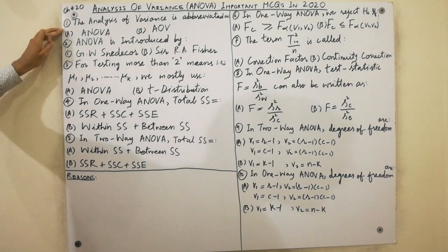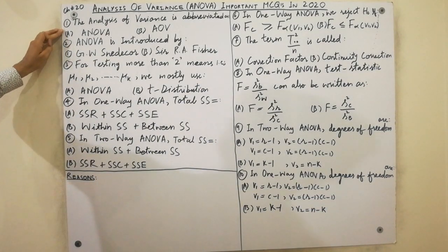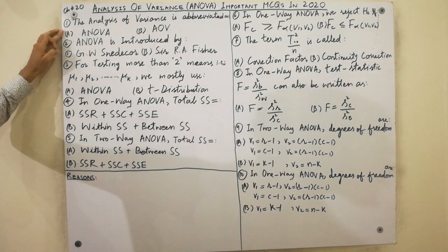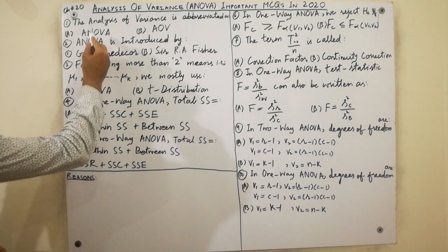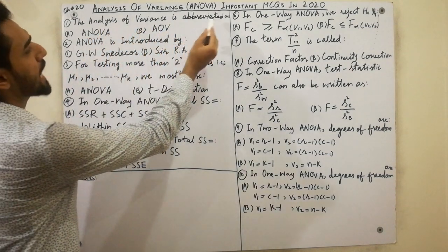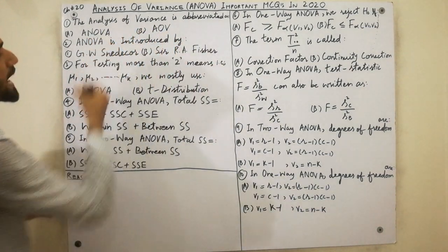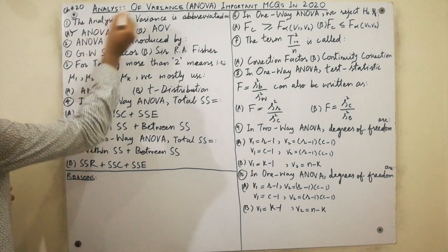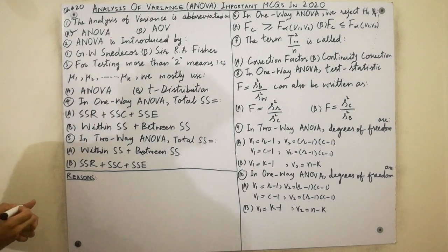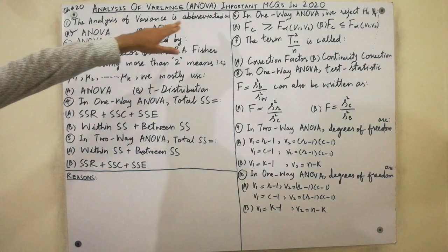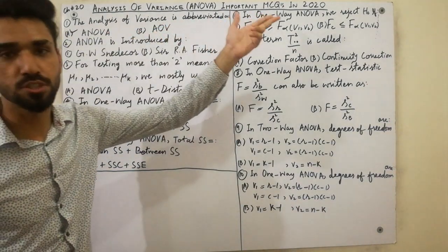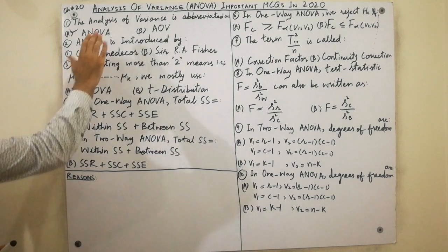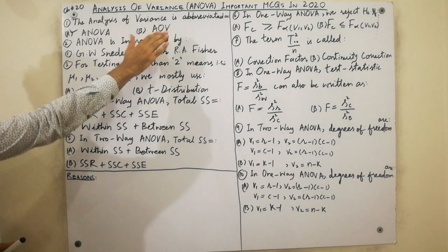The first MCQ is very easy. Everyone knows that the Analysis of Variance is abbreviated as ANOVA, as shown here. So the concept is that Analysis of Variance is abbreviated as ANOVA.